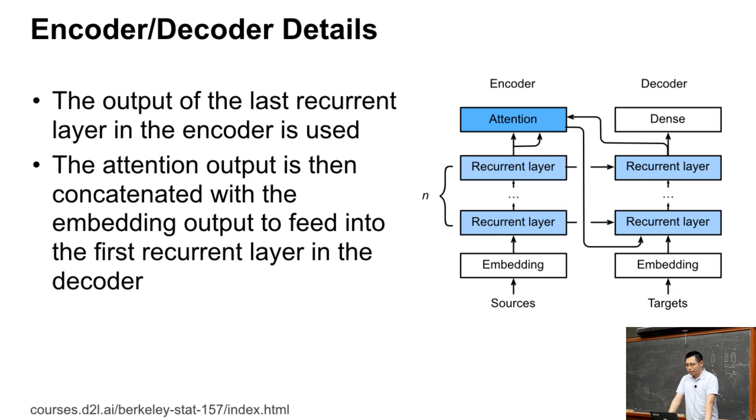So the output of the attention layer will be used as the additional input for the current time, for the first recurrent layers we have. We concat this one with the output of the embedding layer into the recurrent cell.